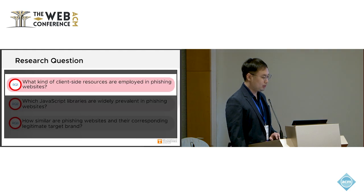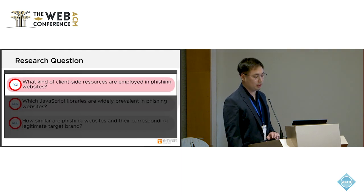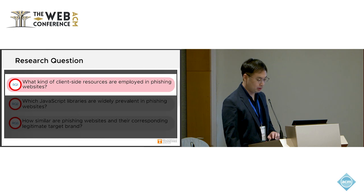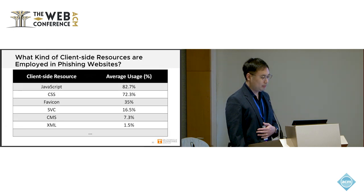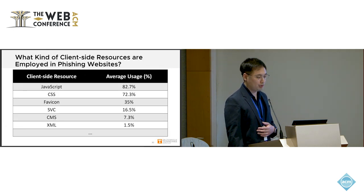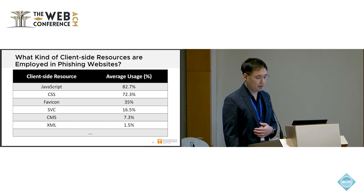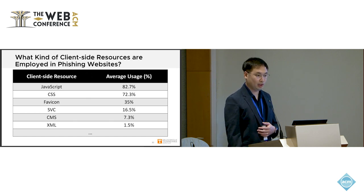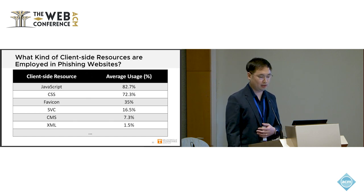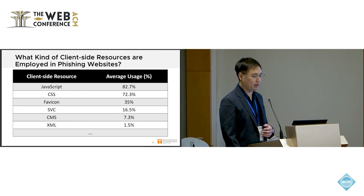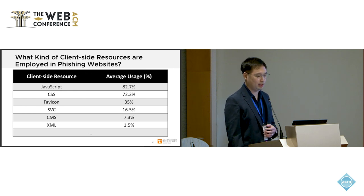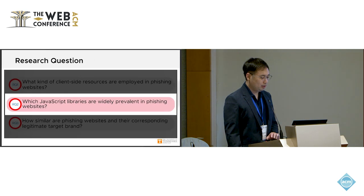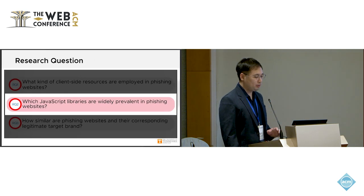To answer our first research question — what kind of client-side resources are used in a phishing website — JavaScript is used the most. However, the average usage is a little over 82% in phishing websites, whereas in benign websites JavaScript is used well over 90%.